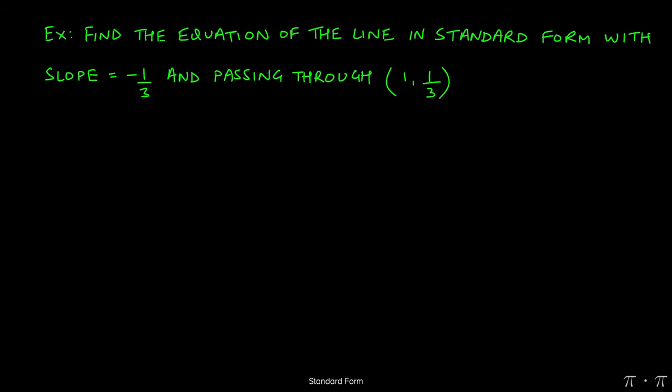In this question, we're asked to find the equation of the line in standard form with slope negative one-third that passes through one comma one-third.